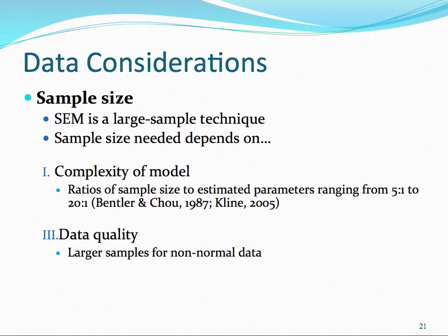Unfortunately, there is no clear-cut rule regarding the exact sample size one needs. There are some recommendations put forth by Bentler and Chow, and Kline and colleagues. These recommendations suggest a ratio of sample size to estimated parameters ranging from 5 to 1—five cases for every one parameter—to 20 to 1.